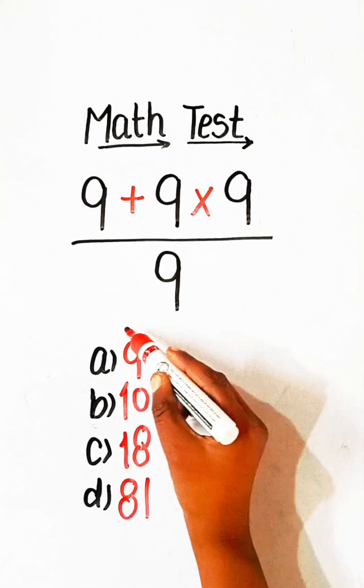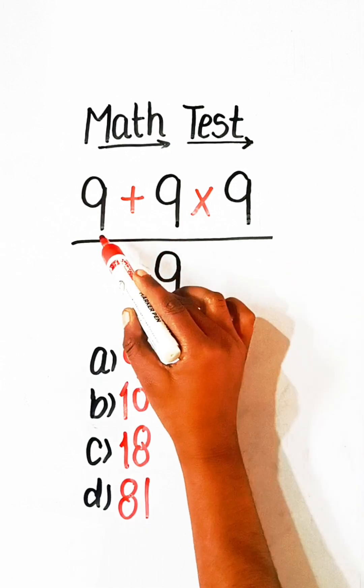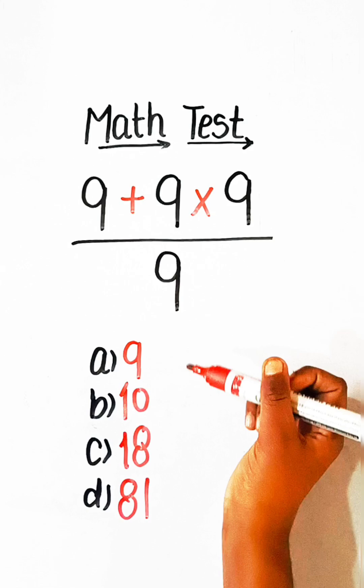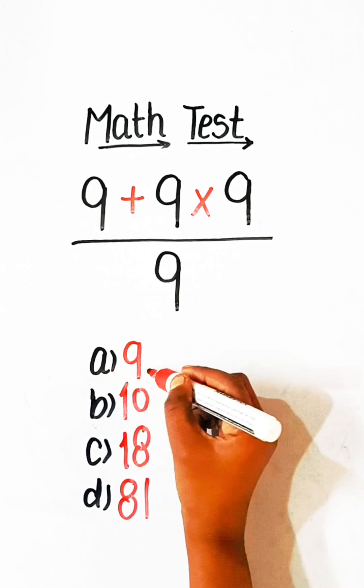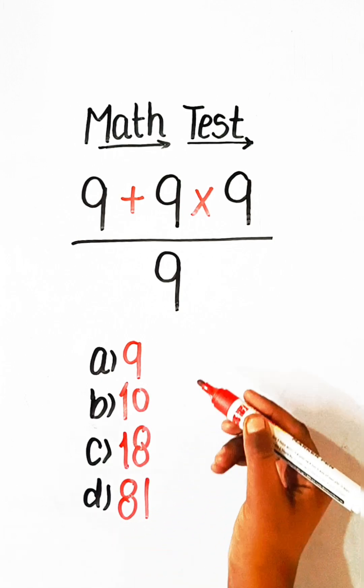So, let's solve this equation. 9 plus 9 multiplied by 9 upon 9 equals to what? Option A, 9. Option B, 10. Option C, 18. Option D, 81.